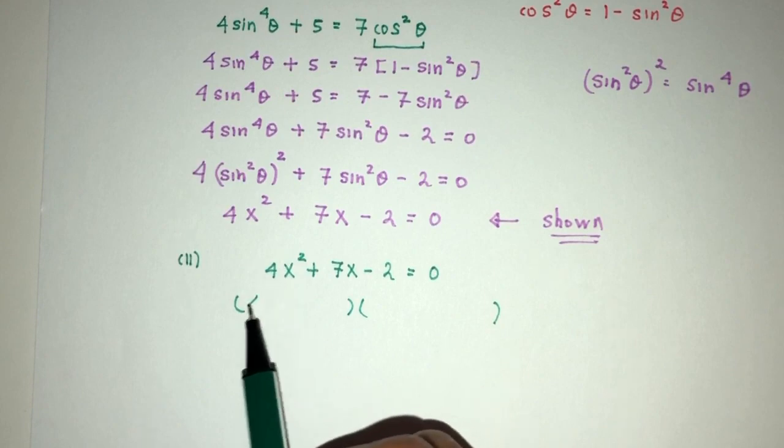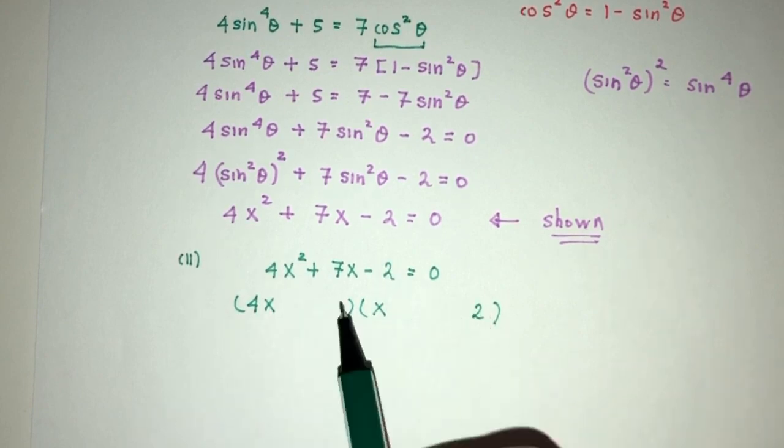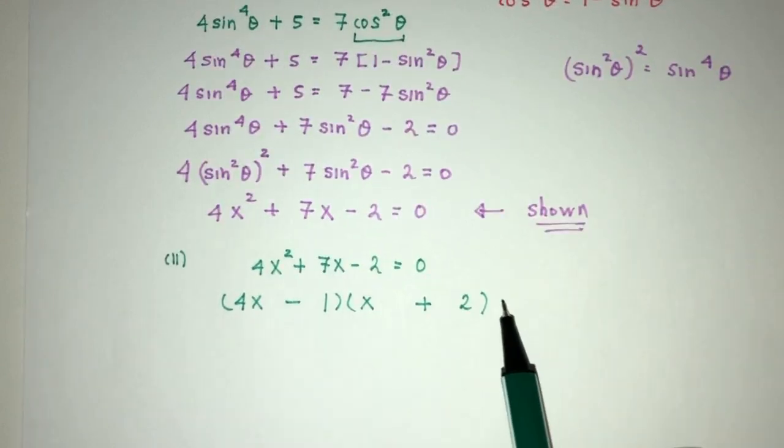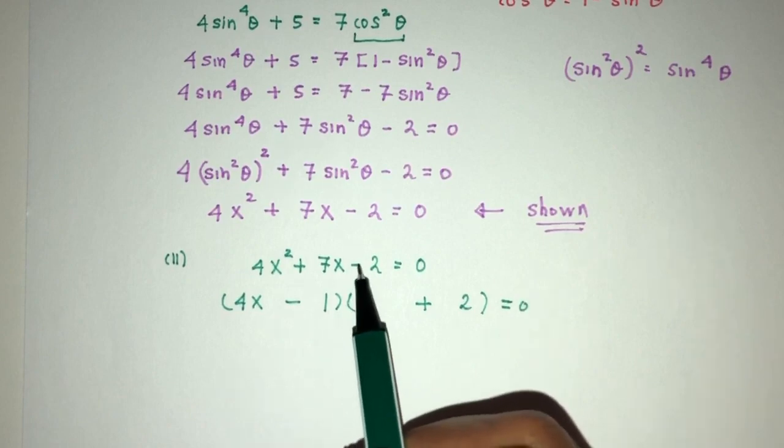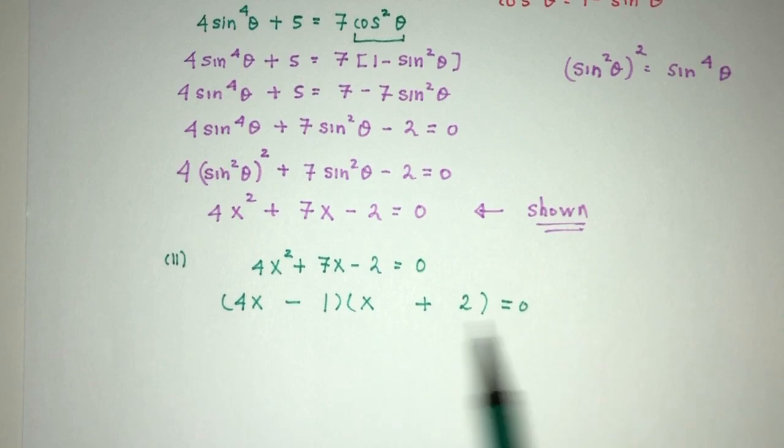Now, what is 4x²? Well, it is 4x times x. And what is 2? 2 is 2 times 1. To get plus 7, I have to have plus 8 minus 1. Now, here we have minus, so minus times plus, it will be minus, so this is good. This is good factorization.